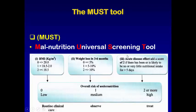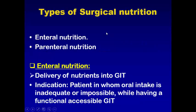If the total MUST score equals zero, we call it low. If it equals one, we call it medium. If it is two or more, we call it high. Zero requires routine clinical care, medium requires observation, and two or more should be treated as a malnutrition state.